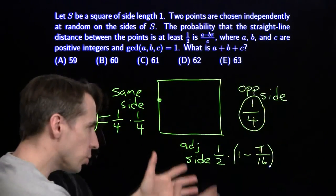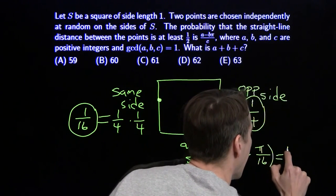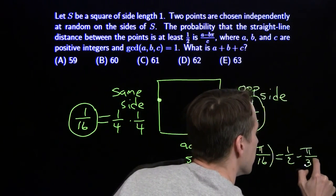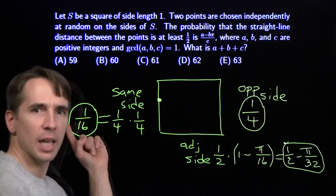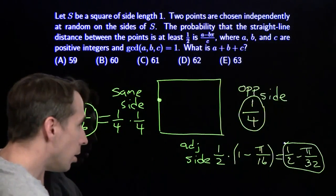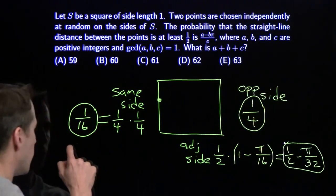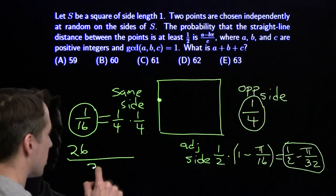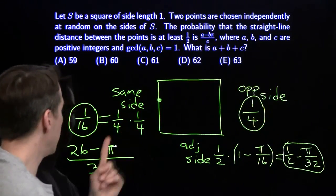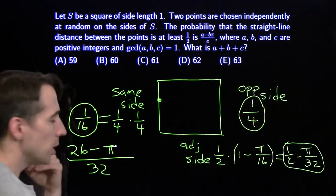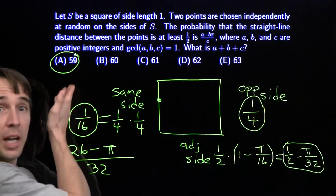Bringing this back: half the time they end up on adjacent sides, and of that half, one minus pi over 16 of the time they end up at least a half apart. So the total contribution from adjacent sides is one half minus pi over 32. Our total probability adds up all three cases. With a denominator of 32, we've got two thirty-seconds from opposite sides, eight thirty-seconds from same side — giving ten — plus 16 more from adjacent sides, for 26 thirty-seconds minus pi in the numerator. So the probability is (26 minus pi) over 32. A is 26, B is 1, C is 32, and 26 plus 1 plus 32 gives us 59. A plus B plus C is 59, and we're done.